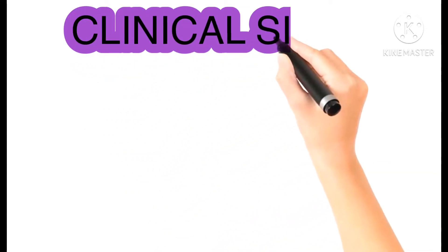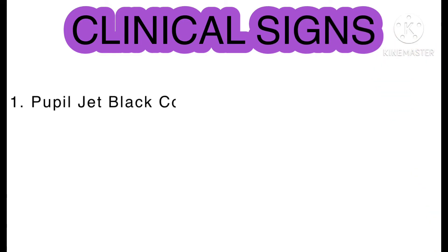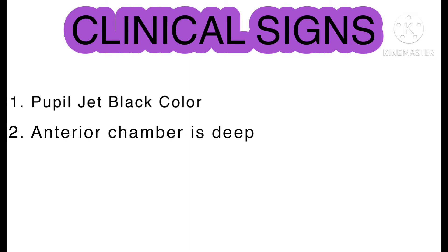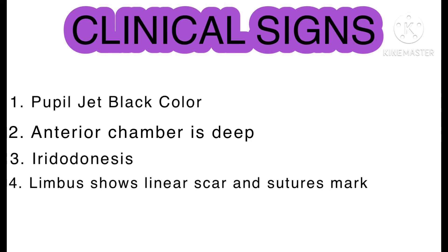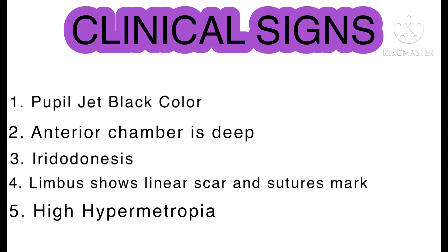For clinical signs: one, the pupil is just black in color; two, the anterior chamber is deep; three, iridodonesis, which is vibration or agitated motion of the iris with eye movement; four, the limbus shows linear scars and suture marks; and five, there is high hypermetropia when we do retinoscopy.